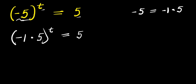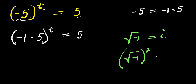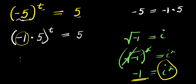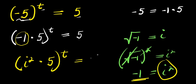Now let's consider this complex identity. If I have the square root of negative 1, this equals i. Now if I take the squares of both sides, the square root will eliminate the square, so I have negative 1 is the same thing as i raised to the power of 2. Because of that, I'm going to replace this negative 1 with i² which is the same thing as negative 1. So I have i² times 5 raised to the power of t, and this equals 5.